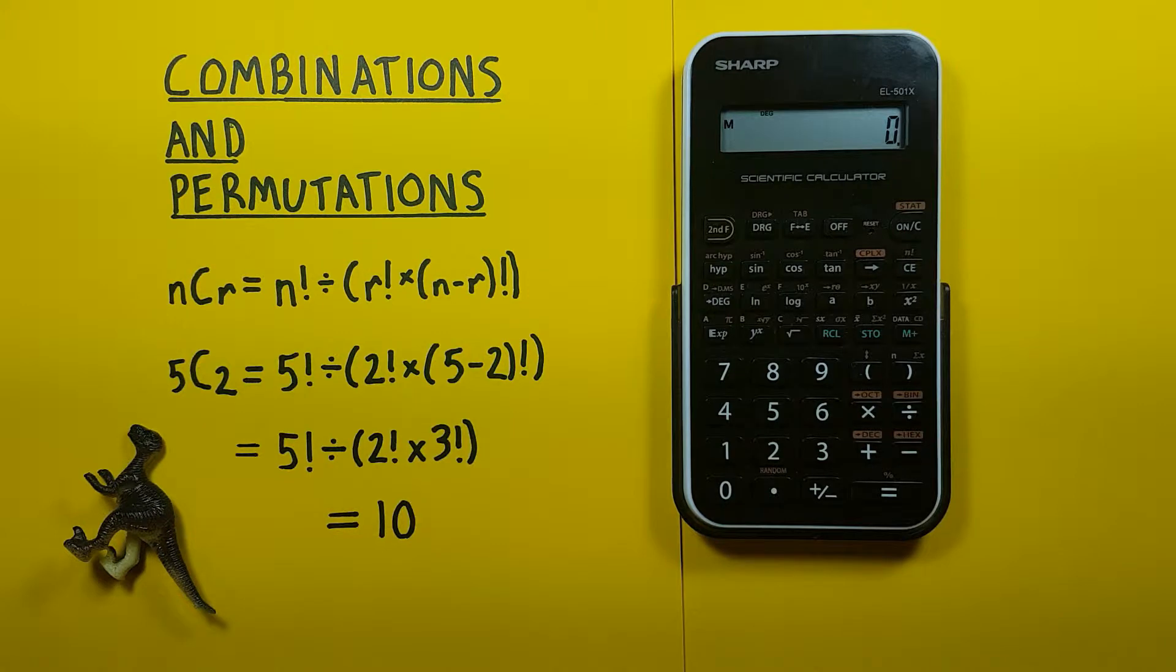To solve combinations we'll be using this formula here: N factorial divided by R factorial times N minus R factorial.